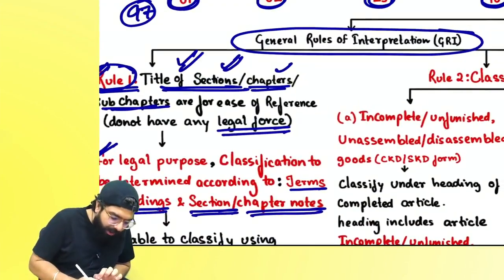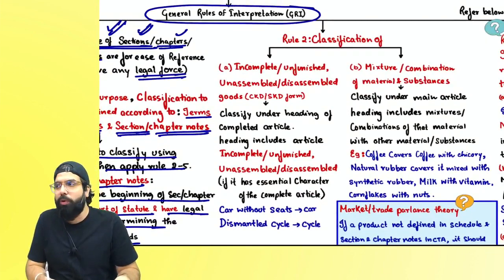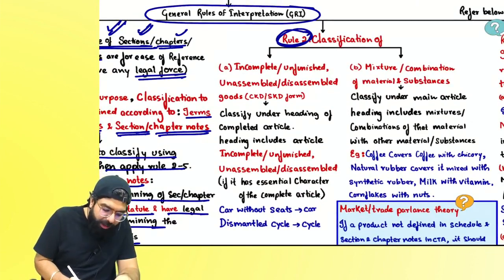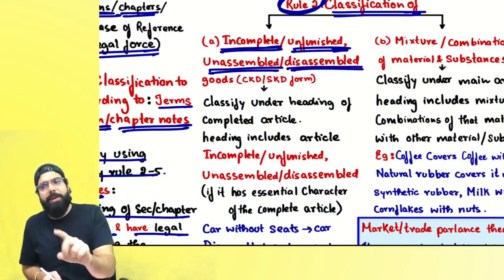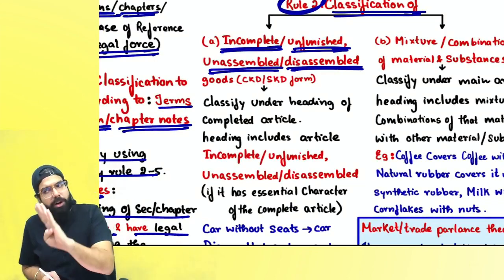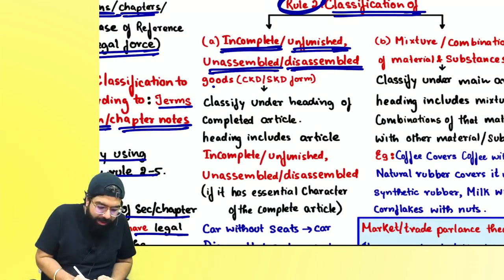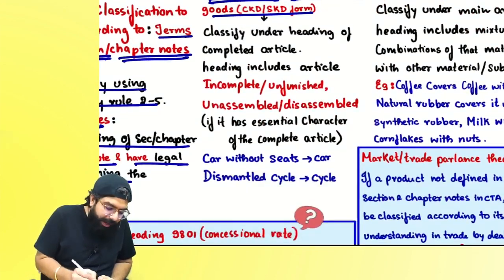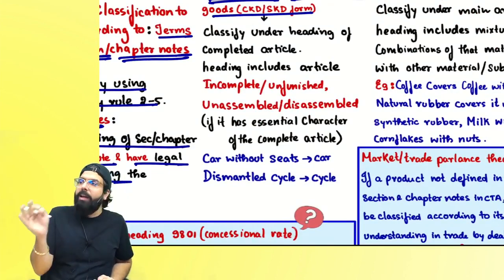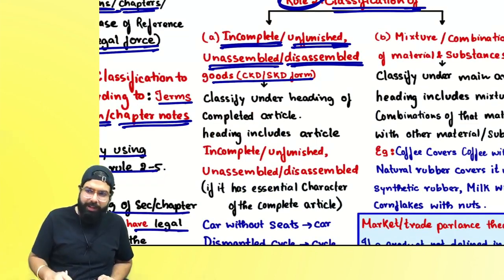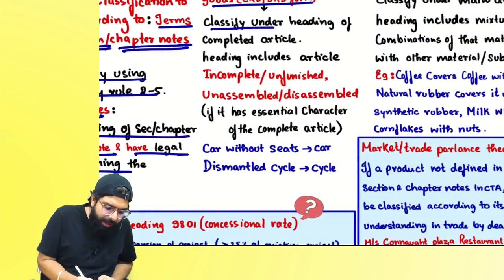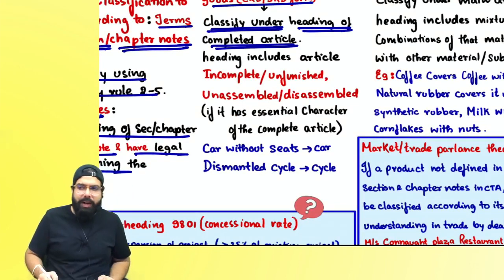If you are not able to determine classification as per rule number one, you apply rule number two. Rule number two covers classification of incomplete, unfinished, unassembled or disassembled goods — basically goods in CKD or SKD form (complete knockdown or semi-knockdown condition). The rule says: please classify under the heading of the complete article.